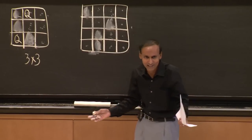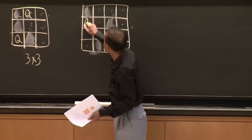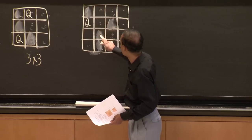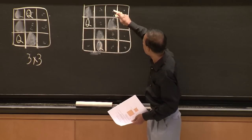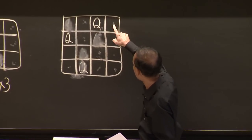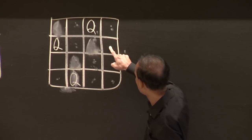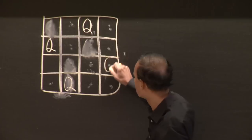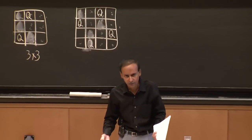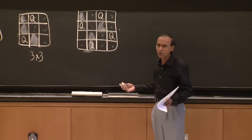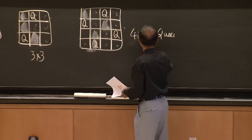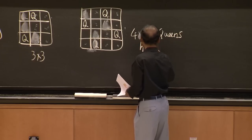Trying a different starting position for the first queen — no, no, no, yes — and moving to column three: no, no, yes. Then column four: yes. So we found a solution. There's actually two solutions for four queens. So four queens does have a solution.